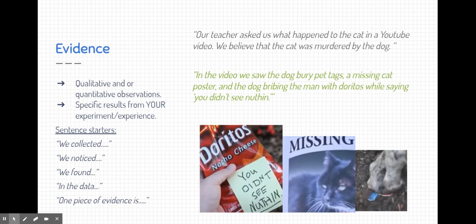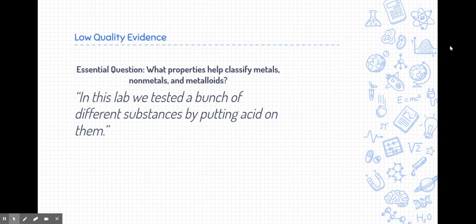All right, going back to our Doritos commercial, let's take a look at an example of an evidence statement. In the video, we saw the dog bury pet tags, a missing cat poster, and the dog bribing the man with Doritos while saying you didn't see nothing. So we're just concisely giving the evidence that we have, and we're going to explain that evidence in the next part with reasoning.